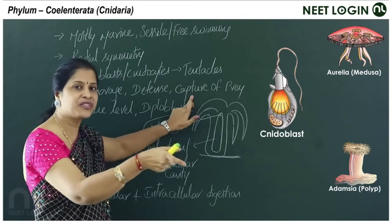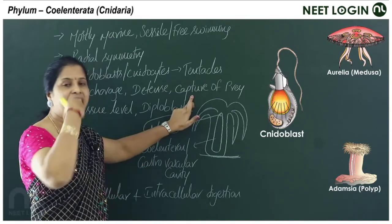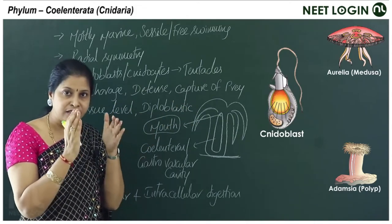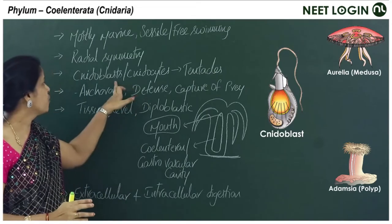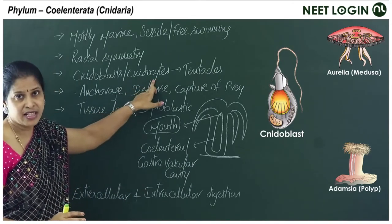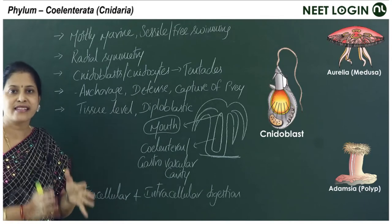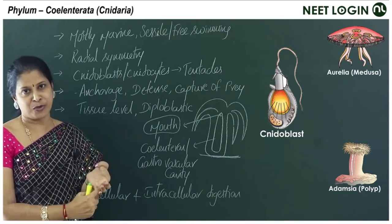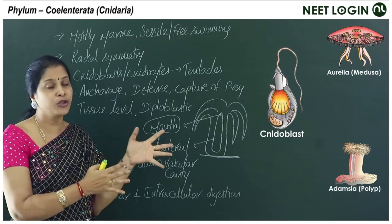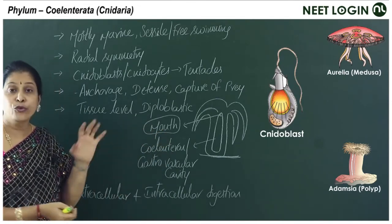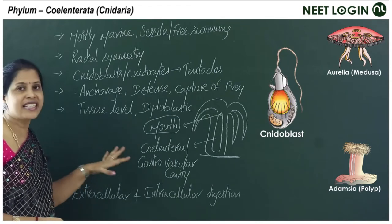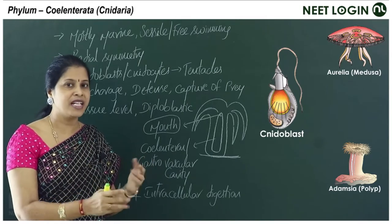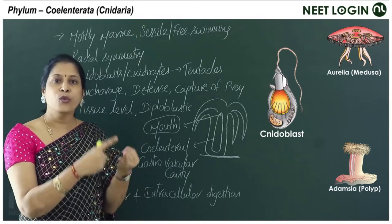Overall, cnidoblast or cnidocyte cells are helpful for anchorage, capture of prey, and defense — a unique property of cnidarians. The phylum is also called Coelenterata because of the presence of a cavity named the coelenteron, also called the gastrovascular cavity.